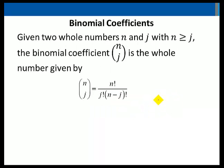Next, the binomial coefficient. Given two whole numbers n and j, with n greater than or equal to j, the binomial coefficient — pronounced 'n choose j' — is the whole number given by n choose j equals n factorial over j factorial times n minus j factorial.